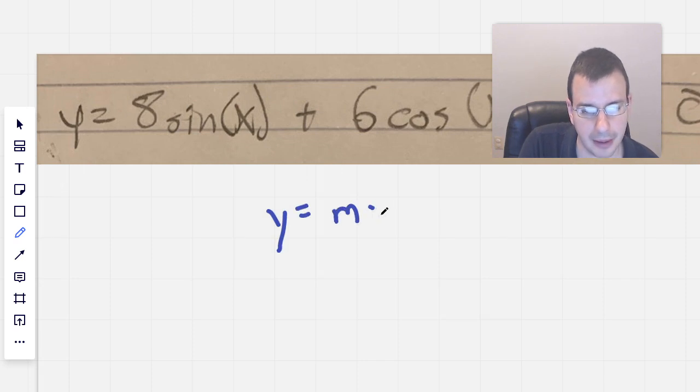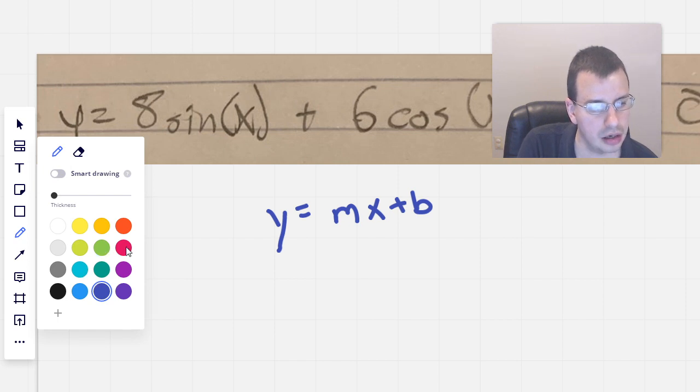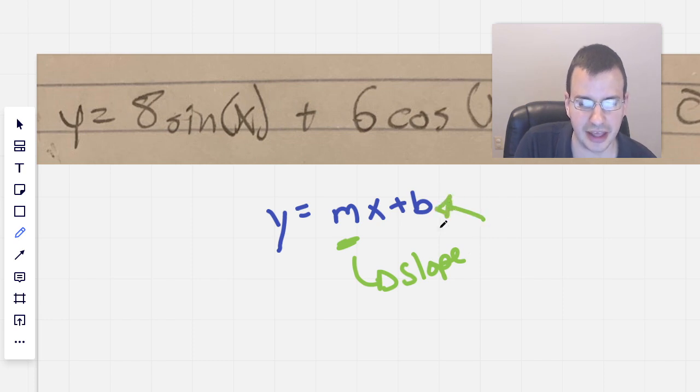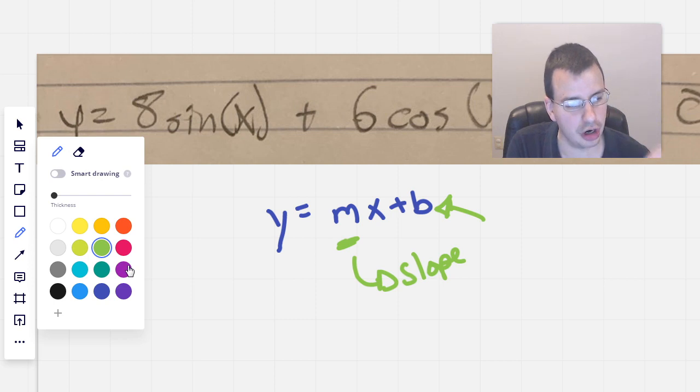y equals mx plus b, where we have m as the slope. Slope. We'll use that finding calculus. And then at the end we'll find b. I'm going to start with the slope because that's the hard one. And I like to do the hard part first.